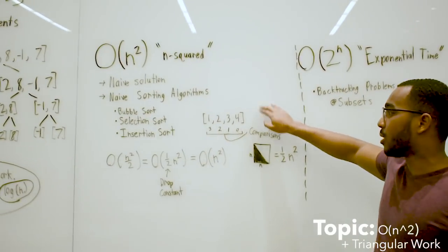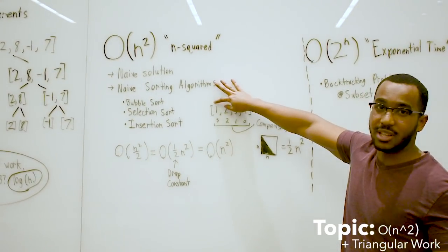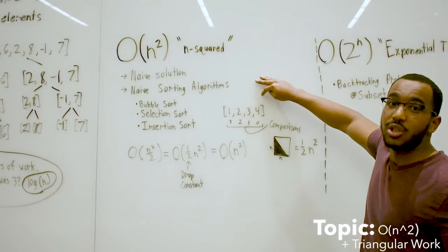One thing you'll notice is even if you have a normal array with 1, 2, 3, 4, if we do three comparisons for this index, two comparisons, one comparison, zero comparison, it forms what looks like a triangle.